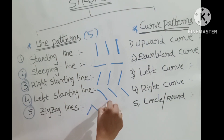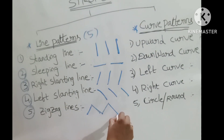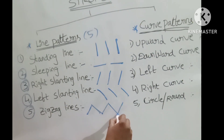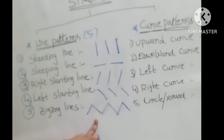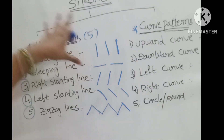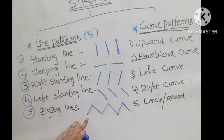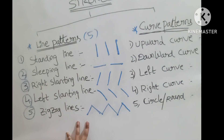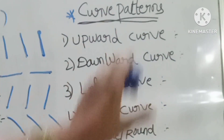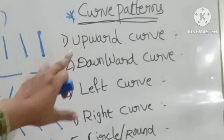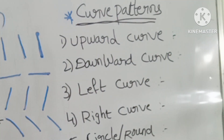Right slanting line, left slanting line, right slanting line, left slanting line — these are the zigzag lines. This is about line patterns. Now we'll see about curve patterns.